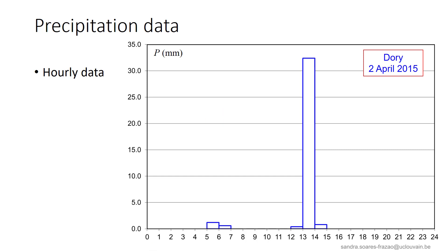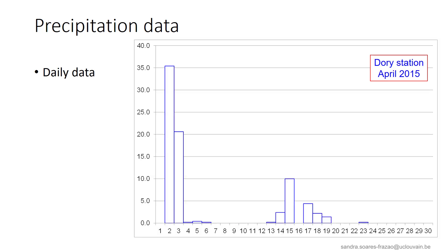Hourly data for this station are presented here. We see that around 1 p.m., almost 35 millimeters of rain were recorded during a rain event that occurred at that time. The recorded data are then presented on a daily basis for the month of April, comprising the April 2nd heavy rain event that we have seen just before.